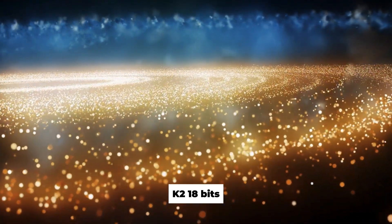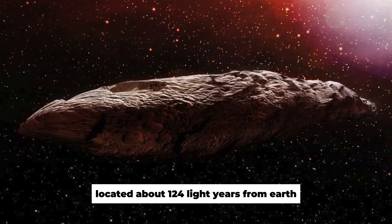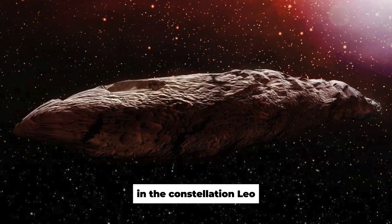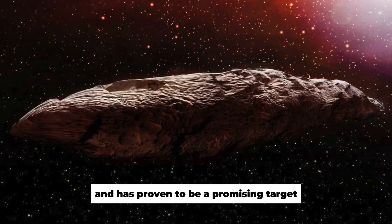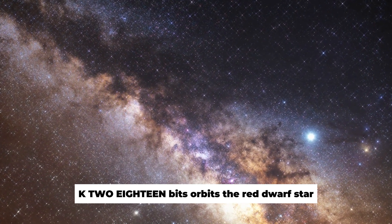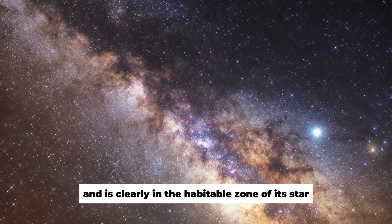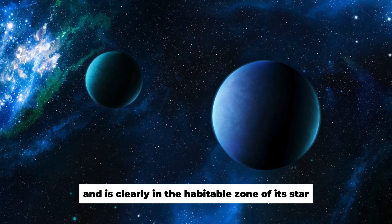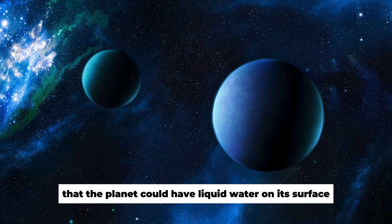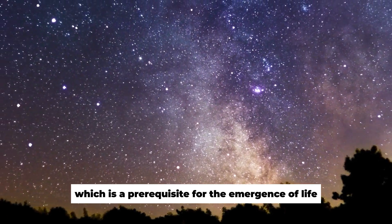K2-18b is an exoplanet located about 124 light-years from Earth in the constellation Leo and has proven to be a promising target in the search for extraterrestrial life. K2-18b orbits the red dwarf star K2-18 and is clearly in the habitable zone of its star. This means that the planet could have liquid water on its surface, which is a prerequisite for the emergence of life.